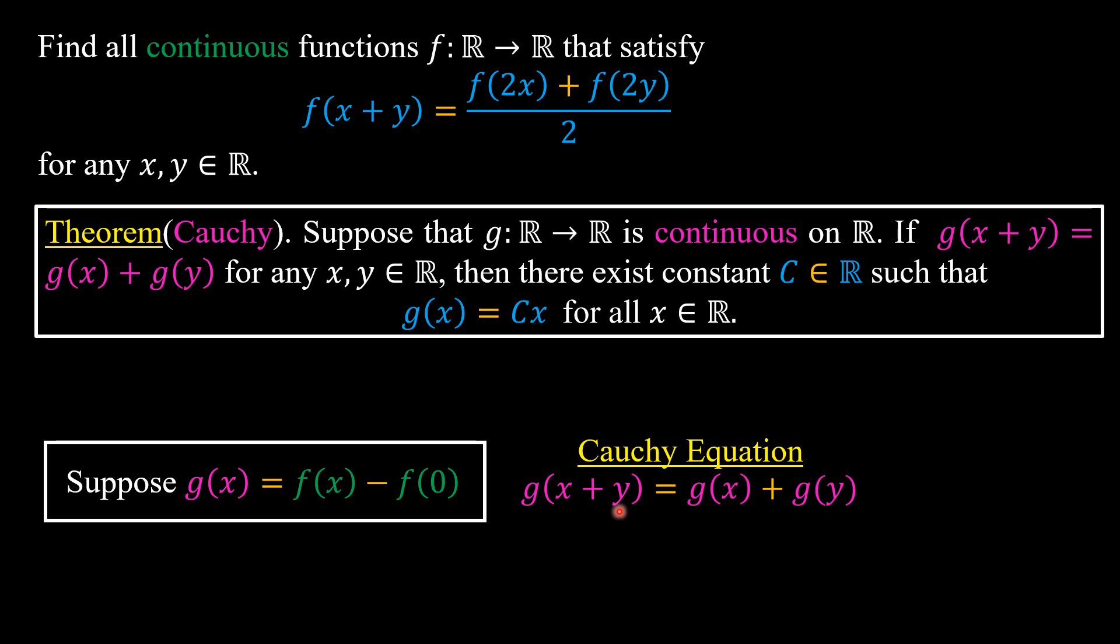The Cauchy theorem says that if we have g is continuous functions on real numbers and g is satisfying the Cauchy equation, then we have g is a constant times x.